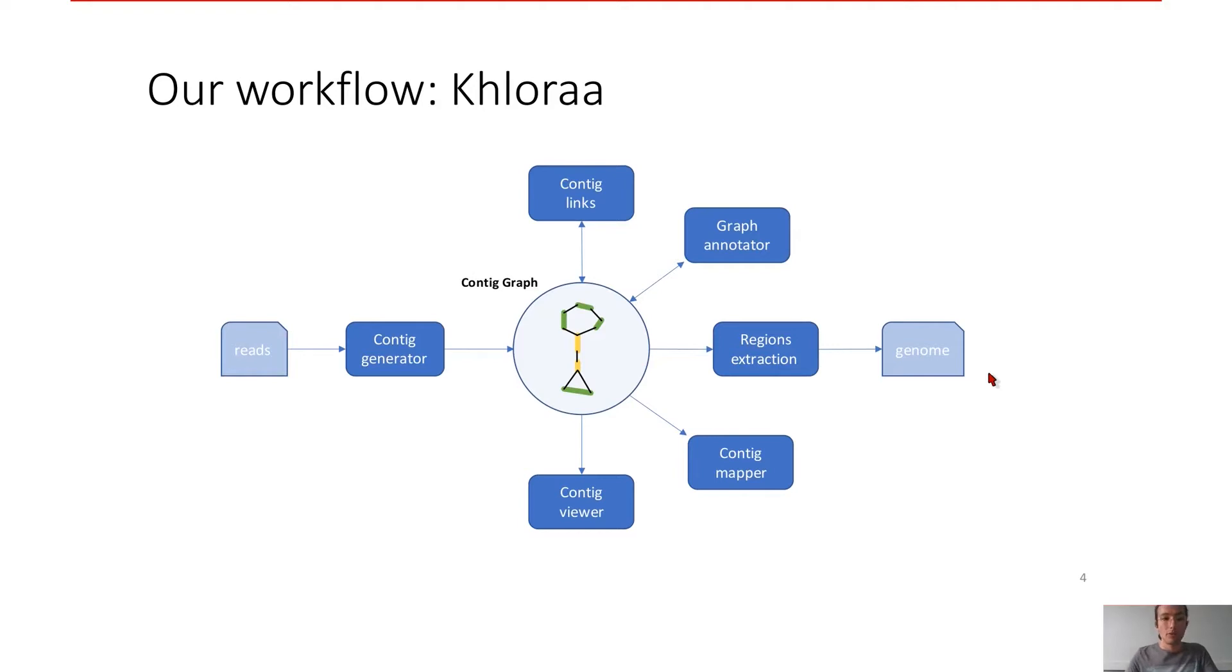Here I will present a part of our workflow named Chlora. So all is around a contig graph. What is a contig graph and how to build it? First, we have to generate contigs and make the links between them and we will obtain a contig graph.